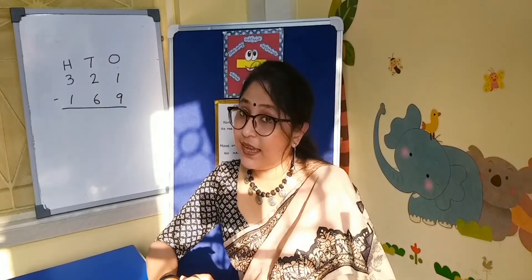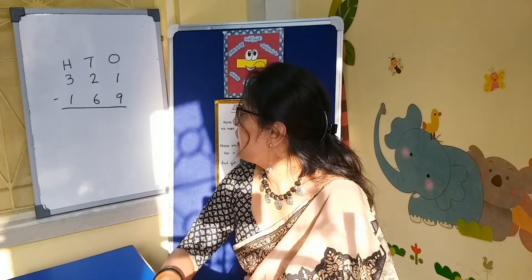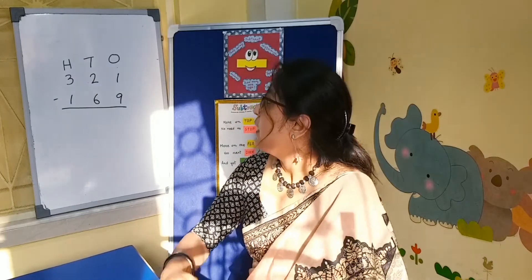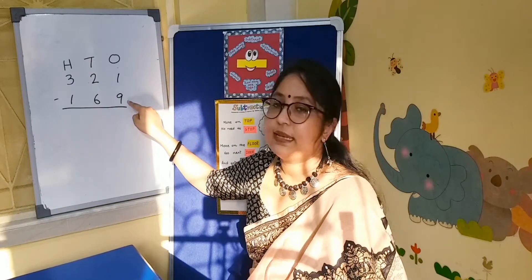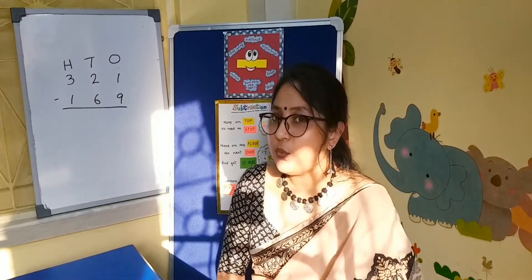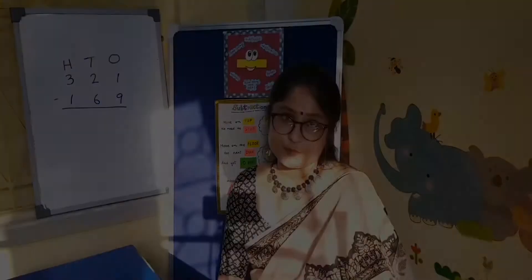Again, there are 2 numbers: 321 and 169. Now I will show you a chart. More on top, no need to stop — 75 is greater than 41, so no need to stop. More on the floor, go to the next door and add 10 more.